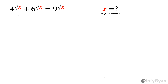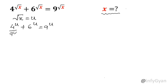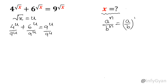I am going to substitute root x equal to u in our equation. Once I do that, the equation will look like 4 power u plus 6 power u equal to 9 power u. Now divide both sides by 9 power u. One property of exponents will come into the picture: a power n over b power n can be written as a over b whole power n.